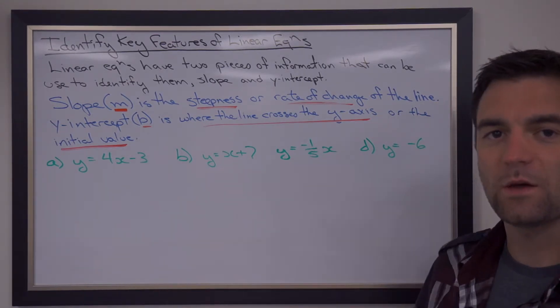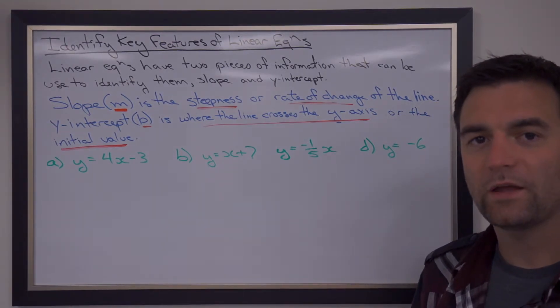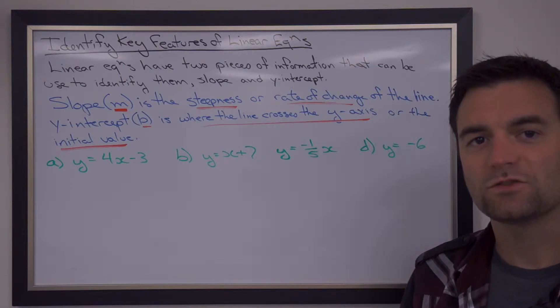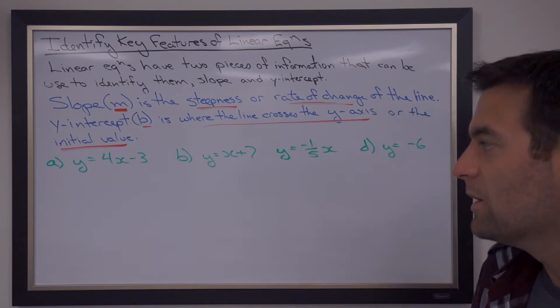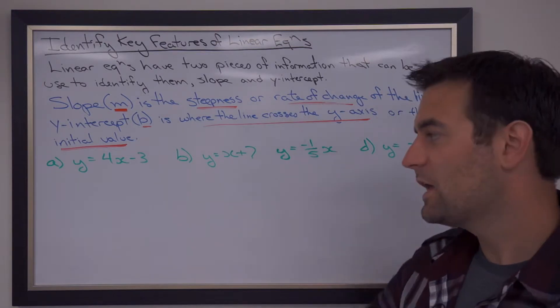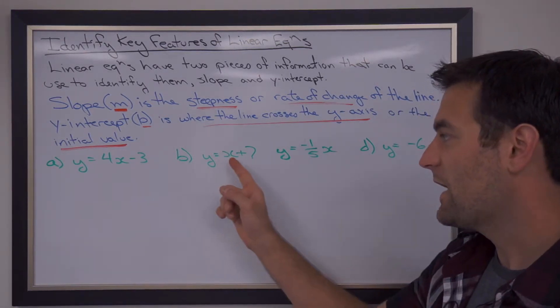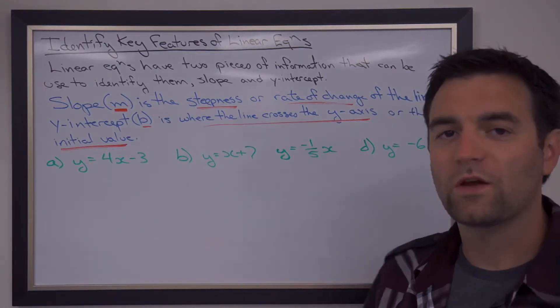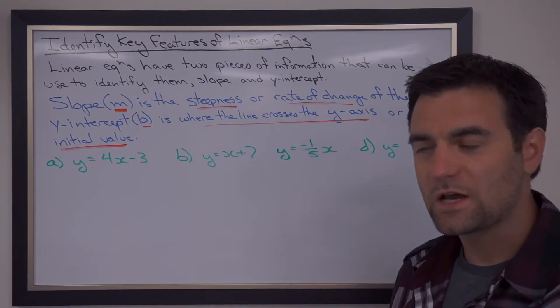So let's look at a few examples of identifying the y-intercept and the slope from an equation. The slope is always located next to a letter X. So whenever you see the number that's beside the letter X, that will be the slope.